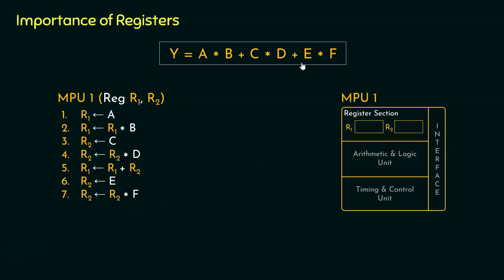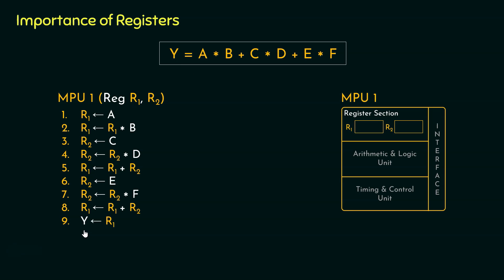Now within R2 we have E×F, and in R1 we have got A×B + C×D. All we have to do is perform the addition between these two. Within R1, we are going to store R1 plus R2. So now within R1 we have got the entire right-hand side of the expression. We still need to assign this to Y, so we will assign to Y the value which is inside R1. This is how, using two registers R1 and R2, we can evaluate this expression in 9 steps.